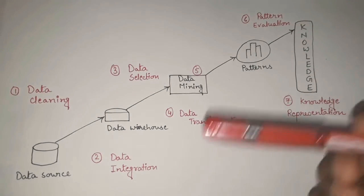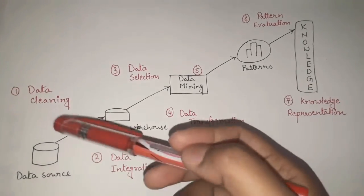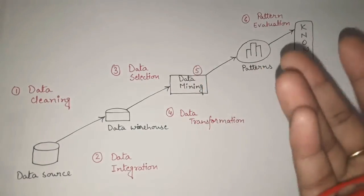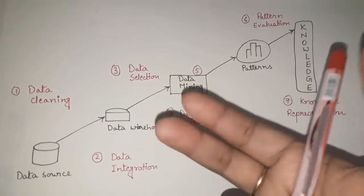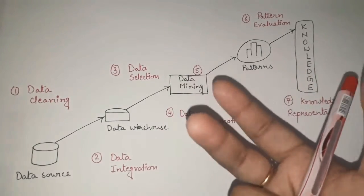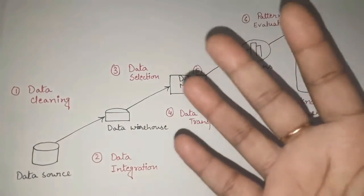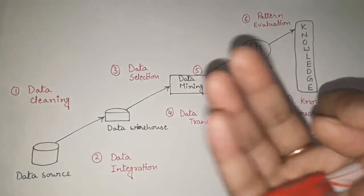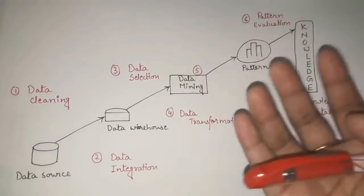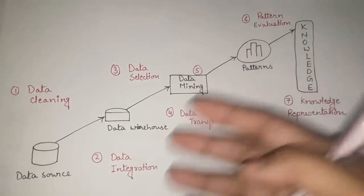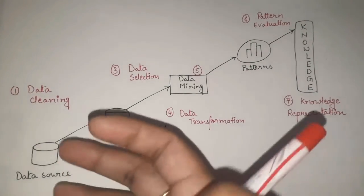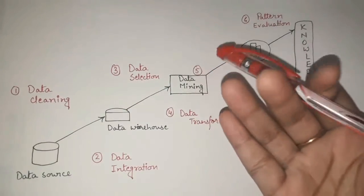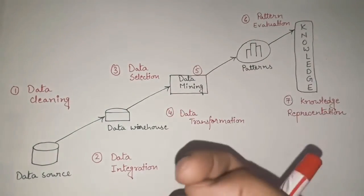The very first step is Data Source. As the name itself indicates, KDD stands for Knowledge Discovery from Database, meaning we will have a database or data source — a collection of bulk data that will contain dirty data, useful data, or data that is not useful to us. We need to perform all the steps so that at the end we get the useful knowledge we are looking for.